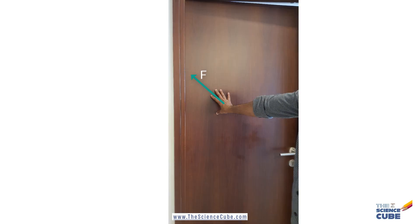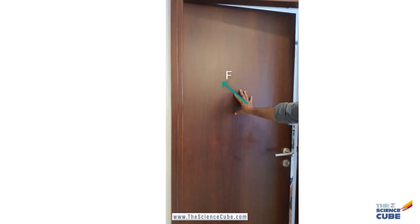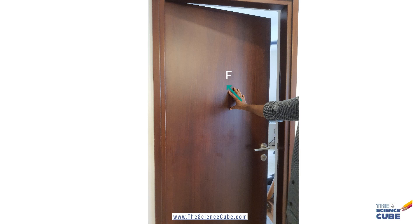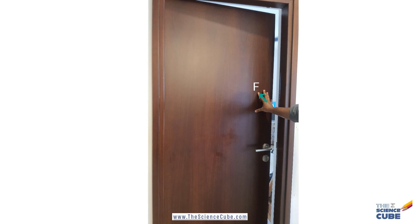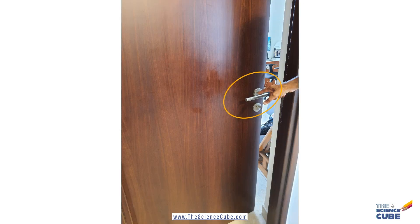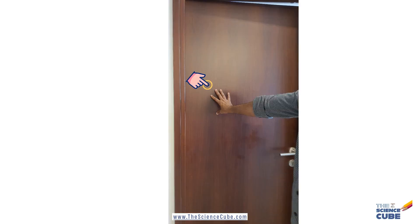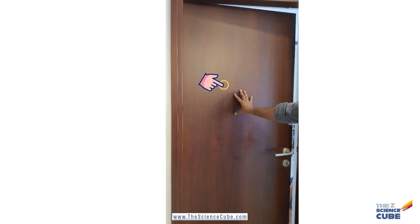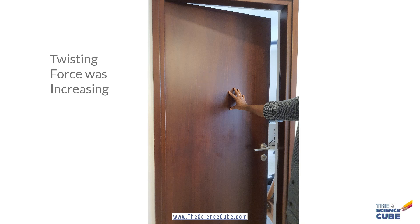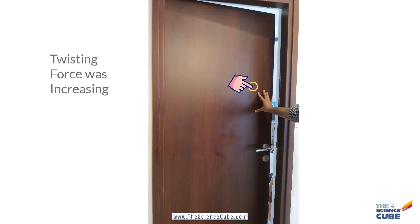As I moved away from the inner to the outer edge, the effort required reduced. The placement of the knob well away from the door's hinge or axis of rotation makes sense. As I moved away from this point to this, the twisting force I was providing to the door was increasing, making it easier to open.